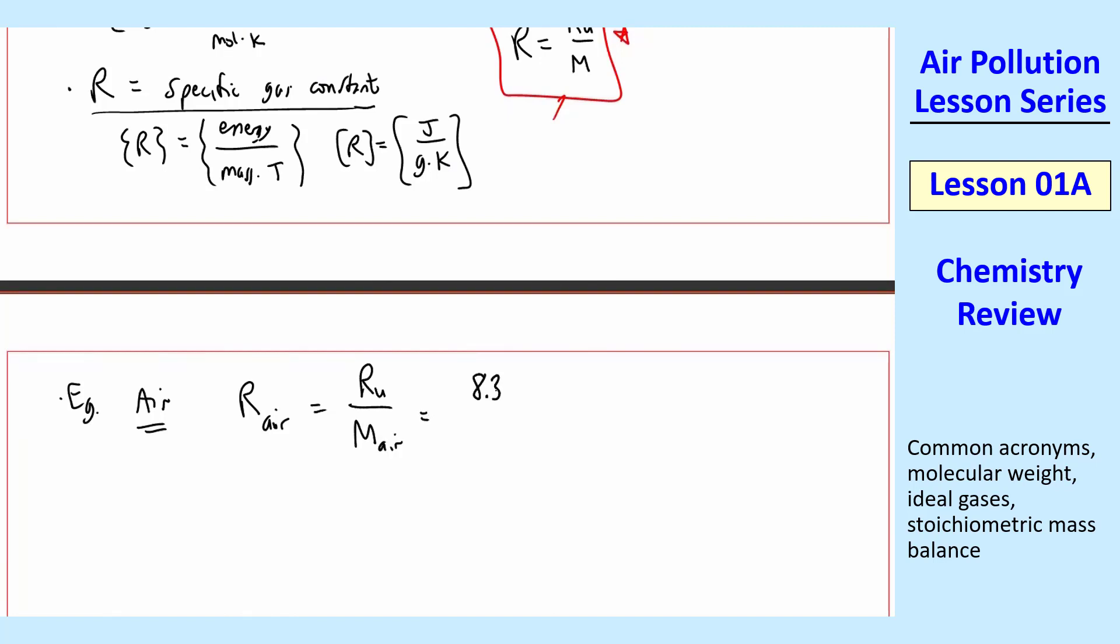And so that would be 8.314 kilojoule per kilomole k over 28.97 kilogram per kilomole. And the kilomoles cancel, this turns out to be 0.2870 kilojoule per kilogram k. So this would be R of air.